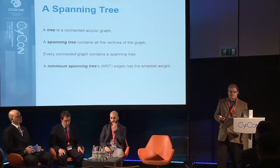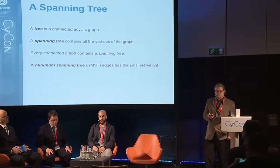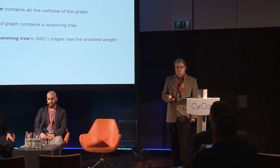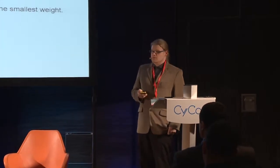A tree is a special kind of graph — it's really useful. It's a connected acyclic graph, meaning there aren't any paths that form a circle. A spanning tree, on the other hand, is a tree that contains all the vertices of a graph. Trees have really useful properties and are used a lot in different algorithms because of their structure. Every connected graph contains a spanning tree.